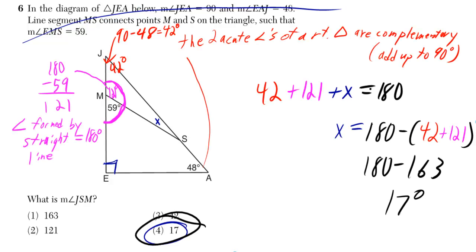First thing you can do is use the fact that when you have an angle that's formed by a straight line, it must equal 180 degrees. It's half a circle.